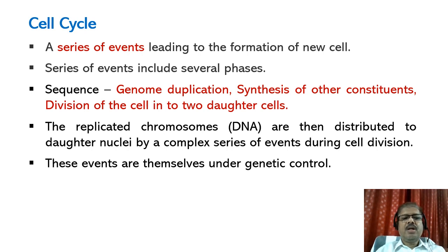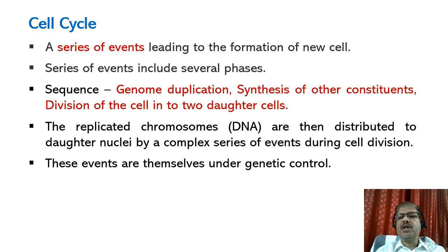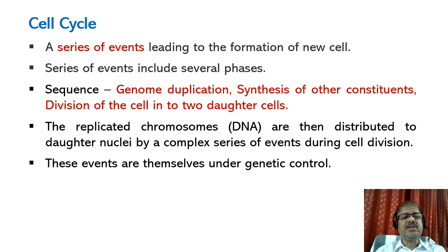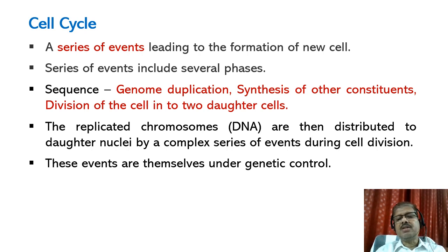A series of events leading to the formation of a new cell is known as the cell cycle. The phenomenal changes leading to the formation of a new population take place in a cell cycle. The series of events include several phases — it is the sequence of events by which a cell duplicates its genome and synthesizes the other constituents of the cell.